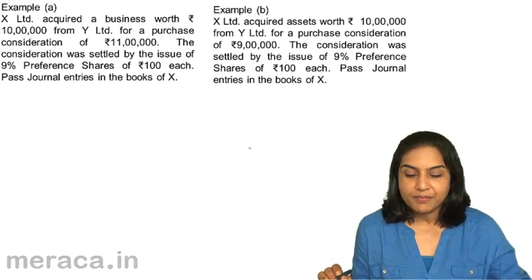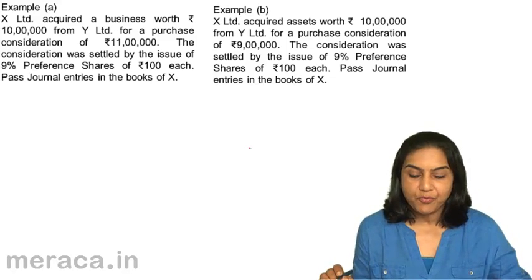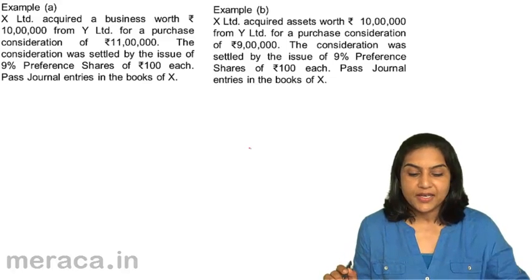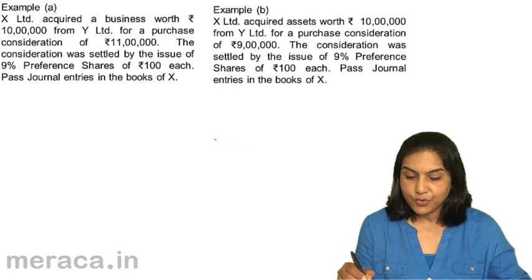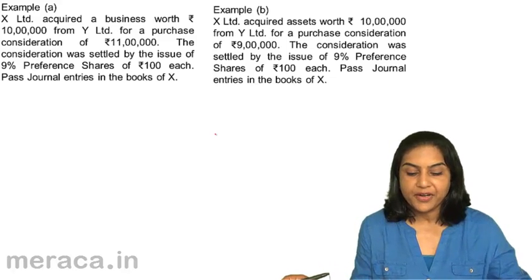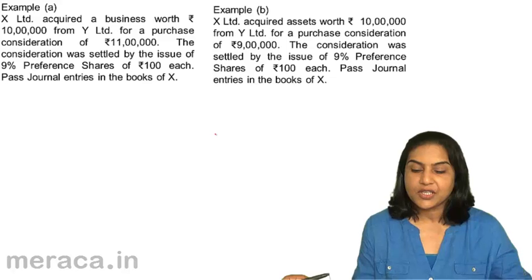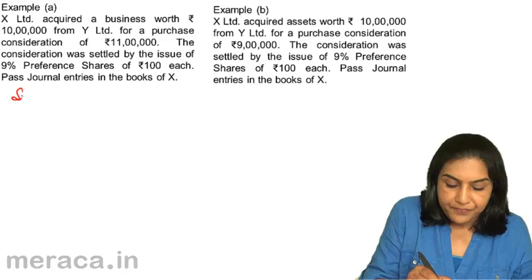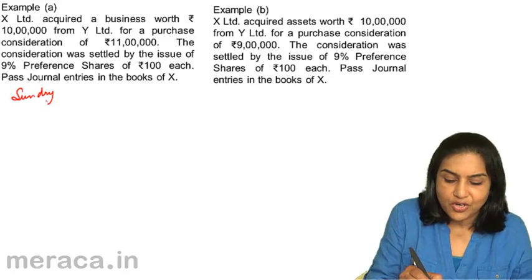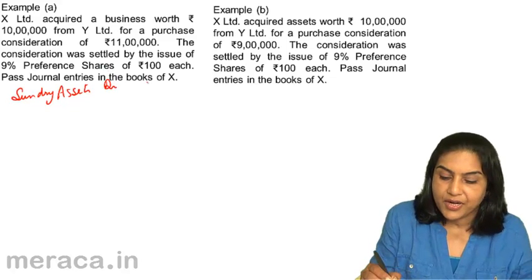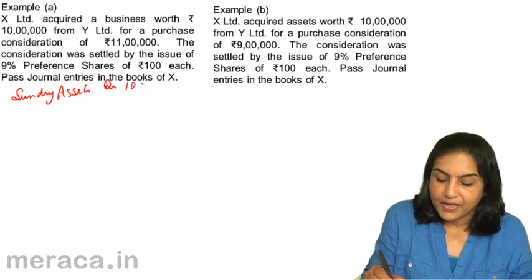X Limited acquired a business worth rupees 10 lakh from Y Limited for a purchase consideration of 11 lakh. Since we are paying more, goodwill is going to arise. The consideration was settled by the issue of 9% preference shares of 100 each. For taking over the business: sundry assets account debit 10 lakhs.